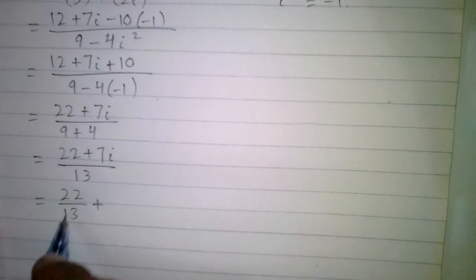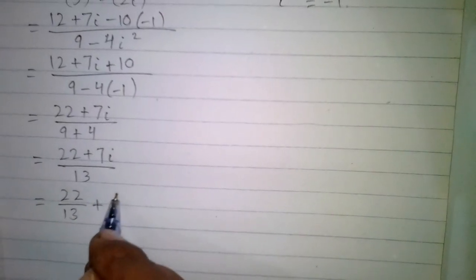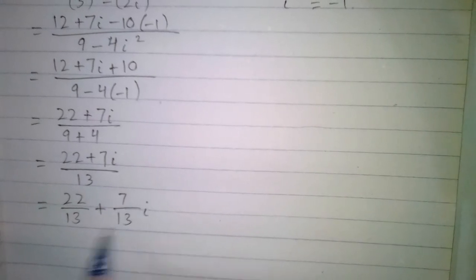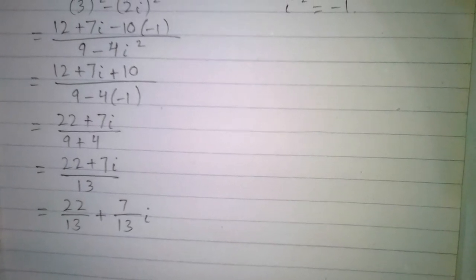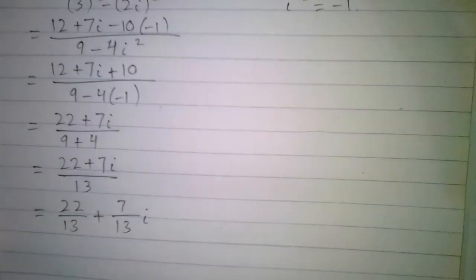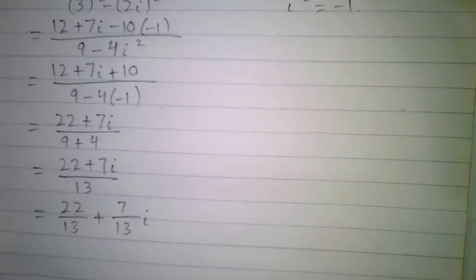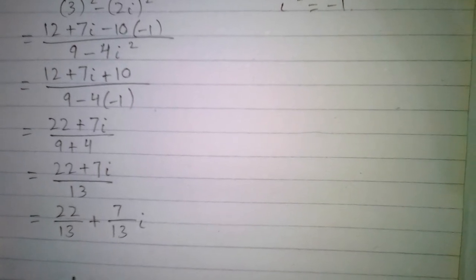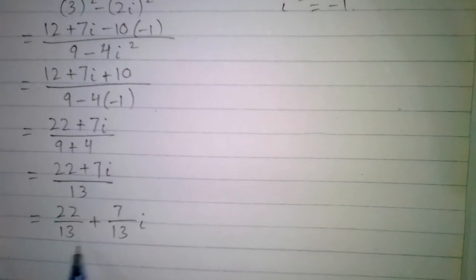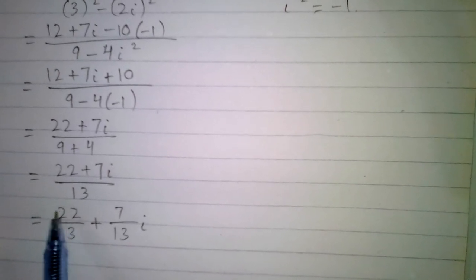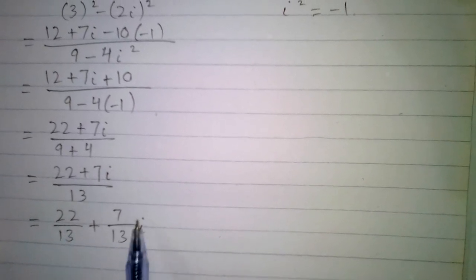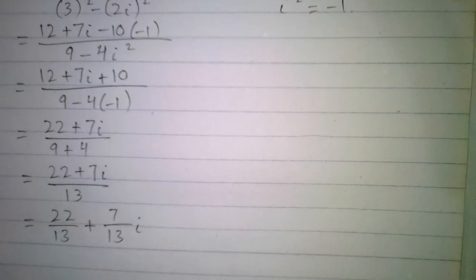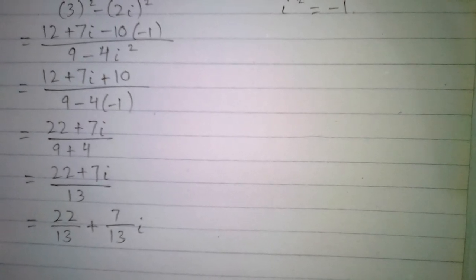We can write this as 22/13 plus 7/13 iota. When we divide two complex numbers, the result is a complex number where 22/13 is the real part and 7/13 is the imaginary part. Thank you.